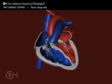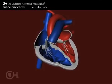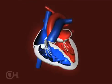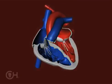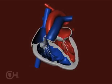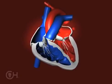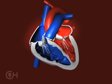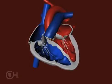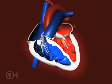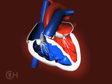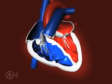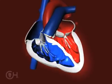The normal heart has two sides, a right side and a left side, and four chambers: the top receiving chambers, or atrium, and the lower chambers, which are thick-walled pumping chambers called ventricles.